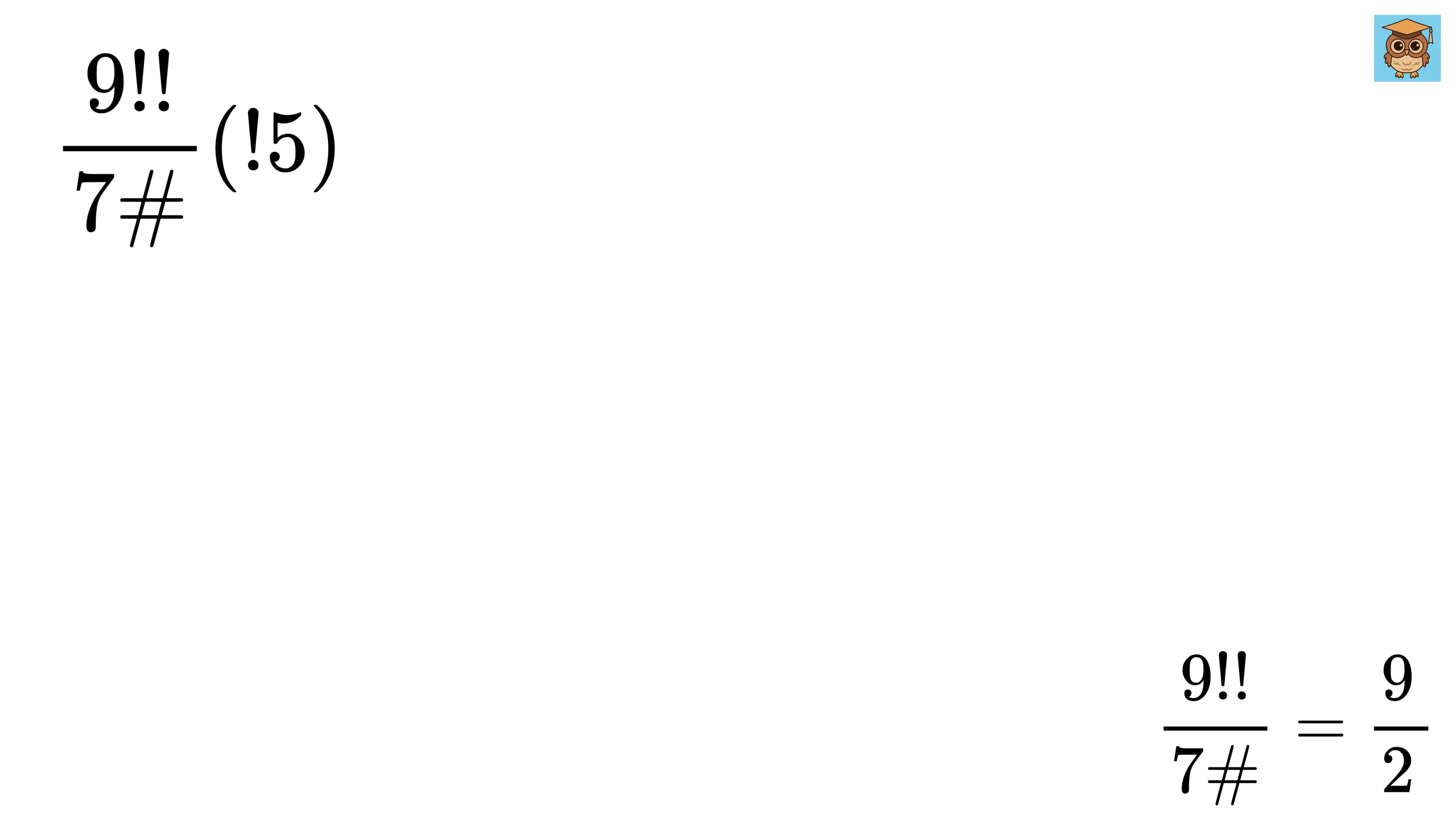Then finally, we need 5 with an exclamation mark. But it is not in front of 5. Instead, it is placed as a prefix. It is called a subfactorial, which counts how many ways we can arrange 5 items so none of them are in their original spots.